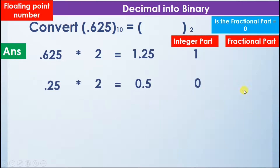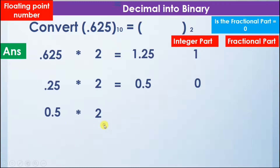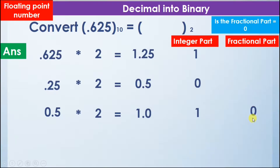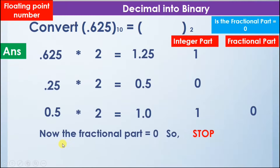The integer part is 0 and the fractional part is 0.5. Is the fractional part equal to 0? No, so we take 0.5 and multiply it by 2. After multiplying 0.5 by 2 we get 1.0. We write 1 for the integer part and 0 for the fractional part. Now we check: is the fractional part equal to 0? Yes — so we stop the procedure.